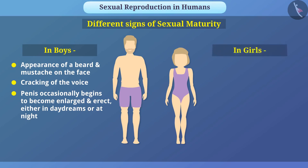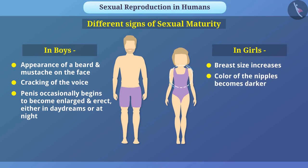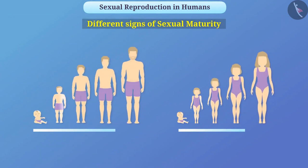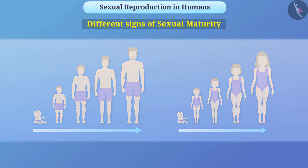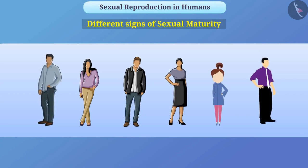Similarly, in girls, the breast size increases, the color of the nipples becomes darker, and girls begin to menstruate. Keep in mind that these changes occur slowly over time. All these changes may occur at different ages in different individuals, and it is not necessary that all changes occur in a person at the same time.